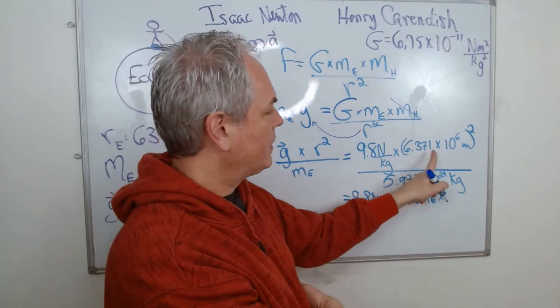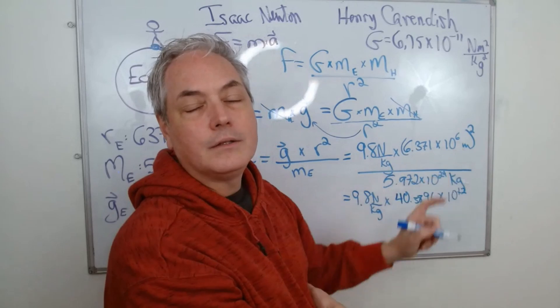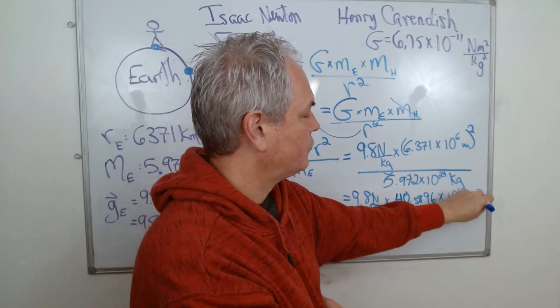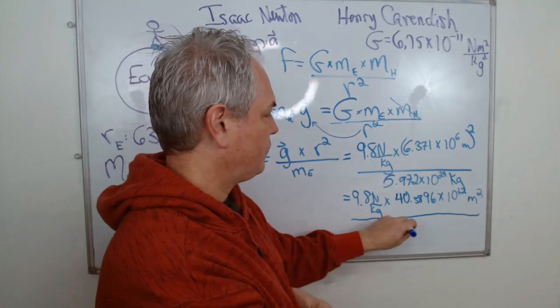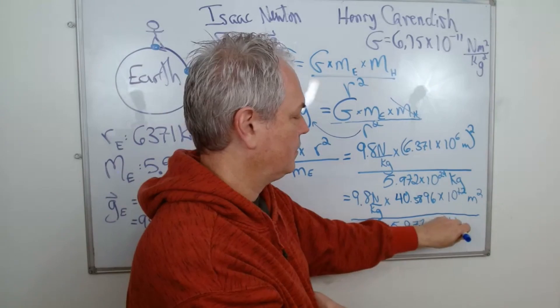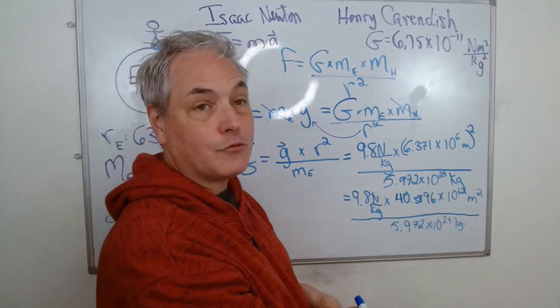So I did this number squared times this number squared, so we have a power of 6 squared is 10 to the power of 12 meter squared here, over 5.972 times 10 to the 24. Can you still see that? Can you still see that? Perfect.